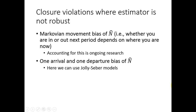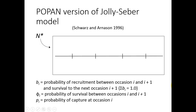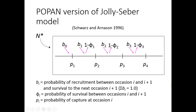When individuals enter and depart only once, then we can use the Jolly-Seber open population models. The POPAN version of the Jolly-Seber model has four parameters: B is the probability of recruitment between occasion i and i+1 with survival to the next occasion at i+1, and the recruitment parameters must sum to 1. C is the probability of survival between occasions i and i+1, and P is the probability of capture at occasion i. In this example there are four capture occasions. Prior to time 1, individuals recruit with probability b and are captured with probability p. In the interval between times 1 and 2, individuals recruit with probability b1 and emigrate with probability 1−b1, and are captured with probability p2, and so on for capture occasions 3 and 4.